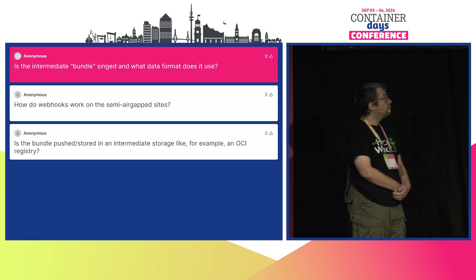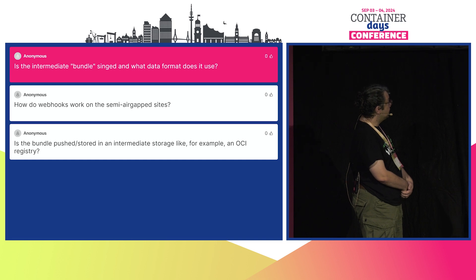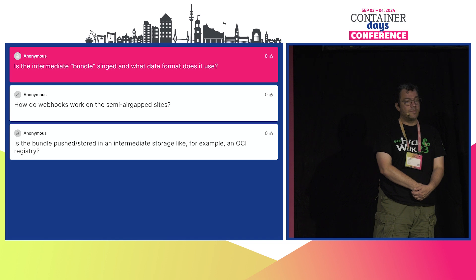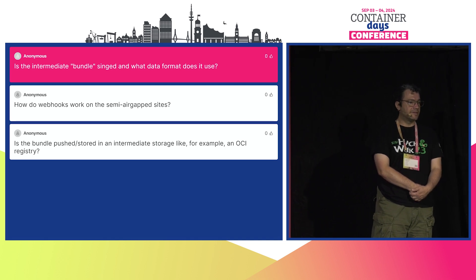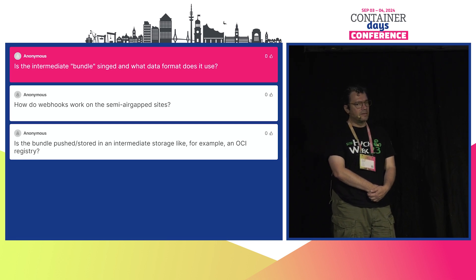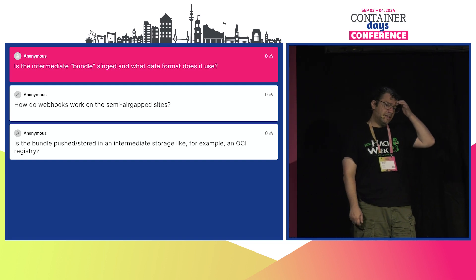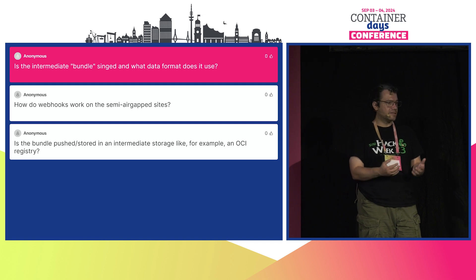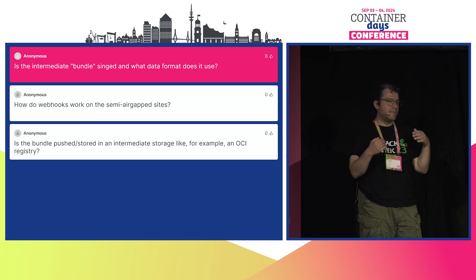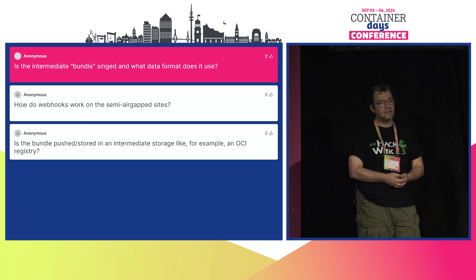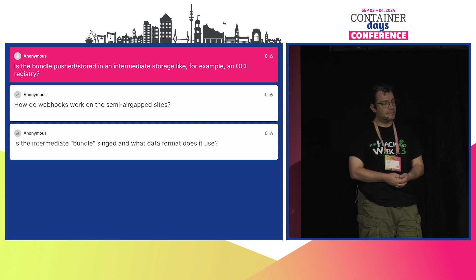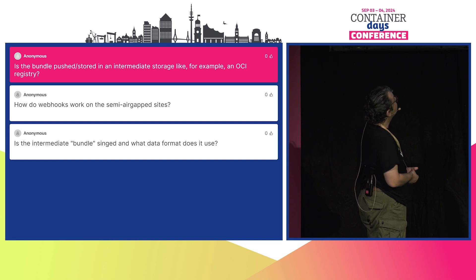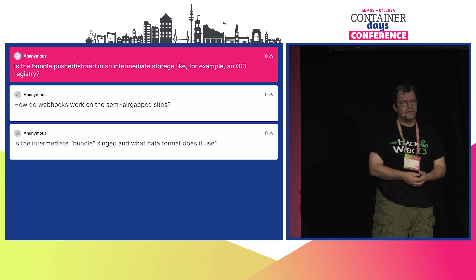Next question: about the intermediate bundle — whether they're signed and the data format. Basically, we take the manifests directly, compress them if needed, and put them in a resource — which is why there's a size limit. We are discussing signing; we want to do that, especially since we now have an experimental feature to store bundles outside the cluster in an OCI registry, because etcd is not a great data store. Once that feature is out of experimental, we want signing in place. The last question about OCI registries was covered by that answer — the bundle will be stored in the OCI registry.